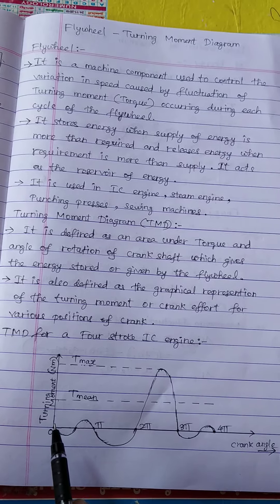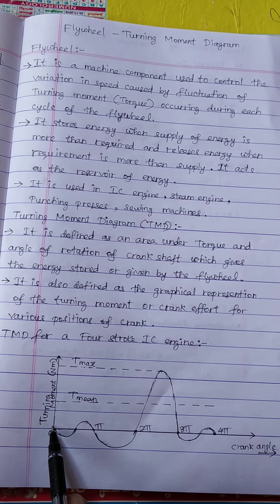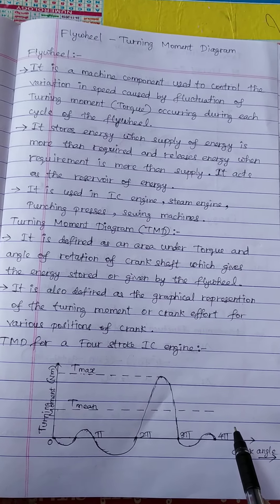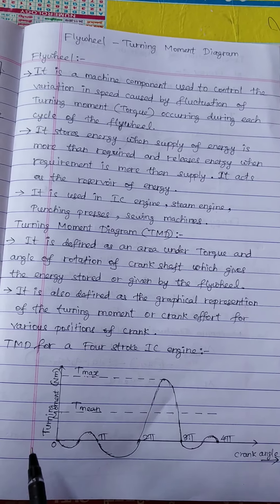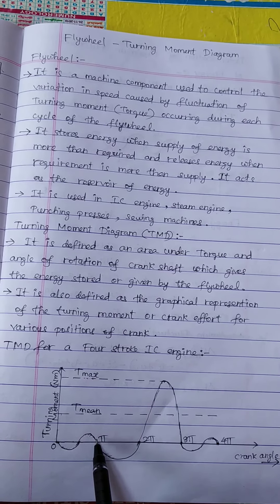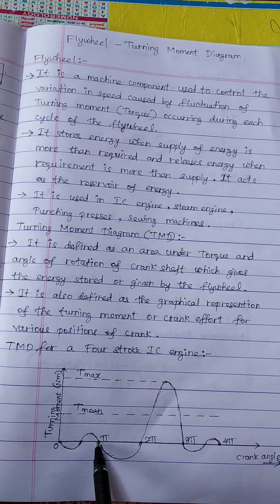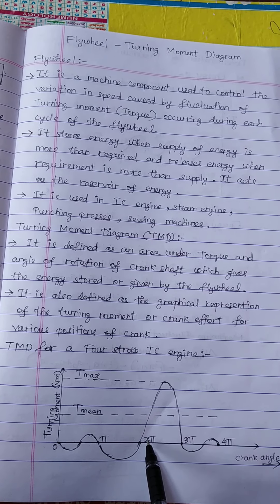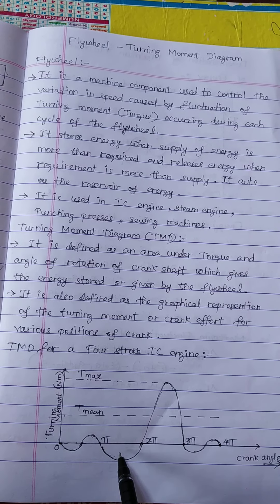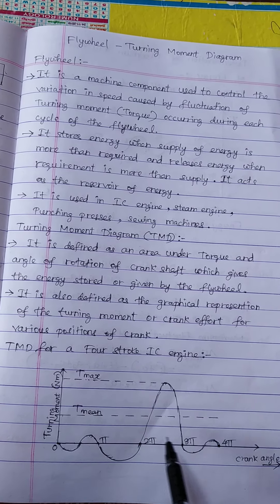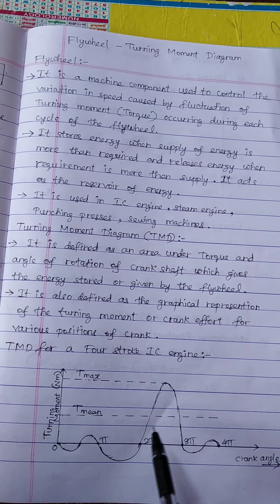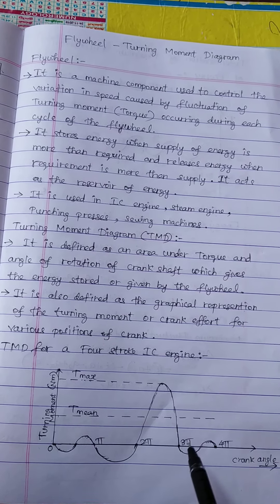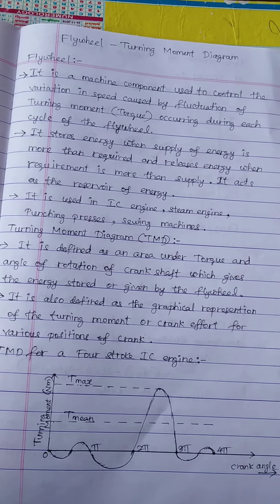That is why I have drawn from 0 degrees to 4π, that is 720 degrees. The first stroke is the suction stroke from 0 to π, then π to 2π (180 to 360 degrees) is the compression stroke, and 2π to 3π is the next revolution where we have the power stroke — this is the positive loop — and next one is the exhaust stroke.